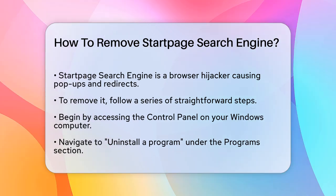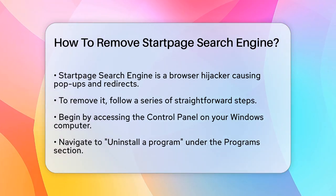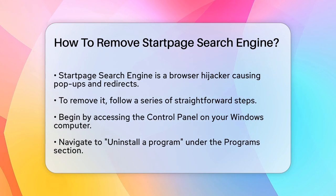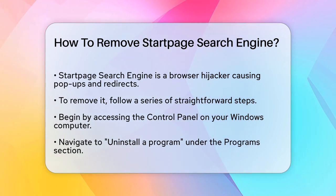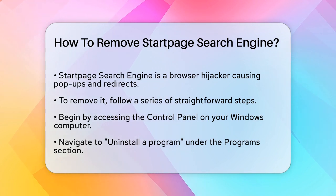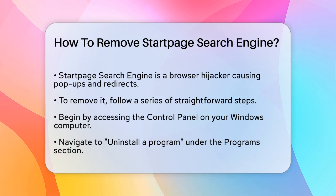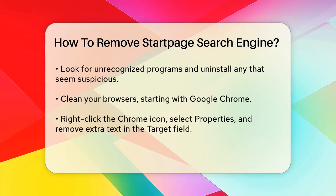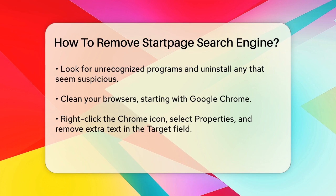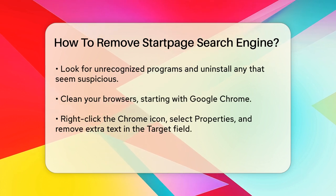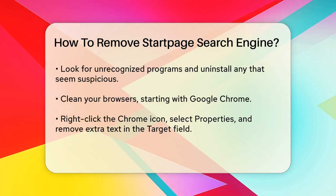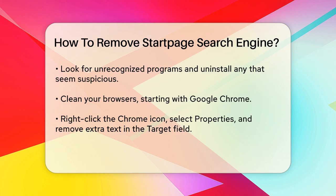Uninstalling the Program. Start by opening the Control Panel on your Windows computer. You can do this by pressing the Win+R combination, typing Control Panel, and hitting Enter. Once in the Control Panel, go to Uninstall a Program under the Programs section. Look for any unrecognized programs that you don't remember installing, as the unwanted software might be disguised under a different name. Select the unwanted program and click Uninstall.